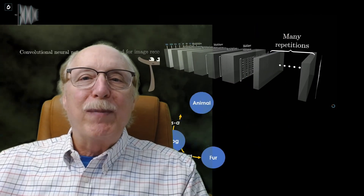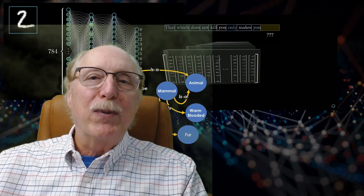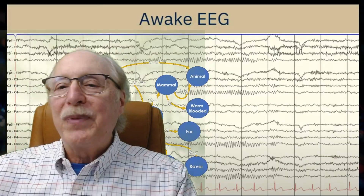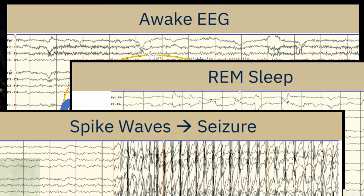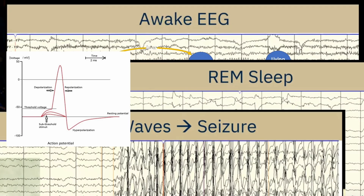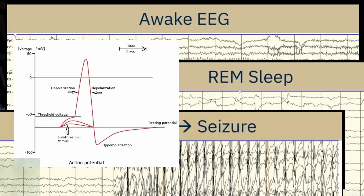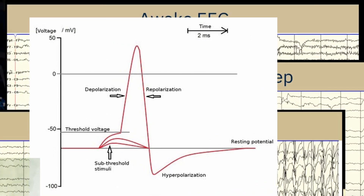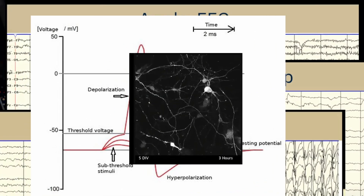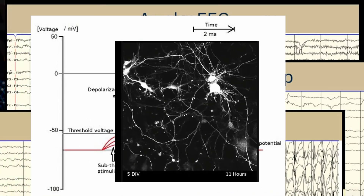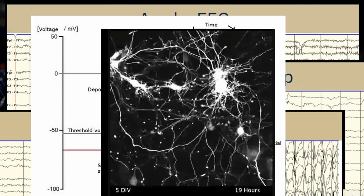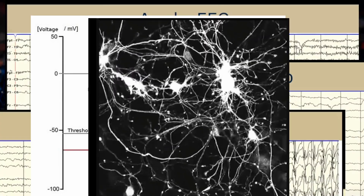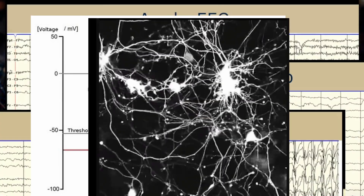I'm Charles Simon, long-time AI researcher, software developer, and manager. In addition to AI work, I've developed software for several neurological test instruments and neural simulators, and along the way, learned a lot about the capabilities and limitations of biological neurons and how your brain must work to do the things it does.